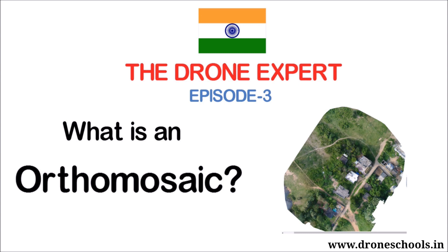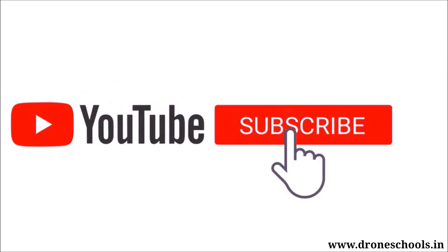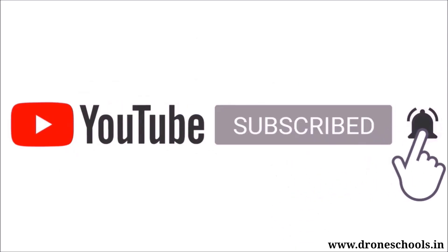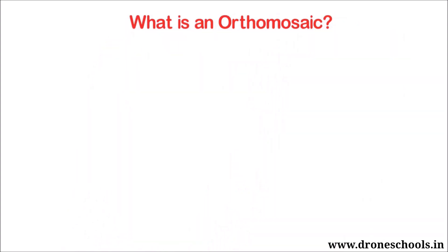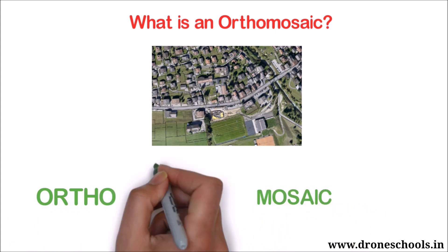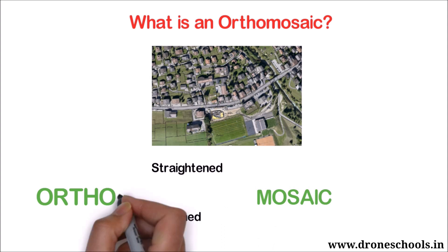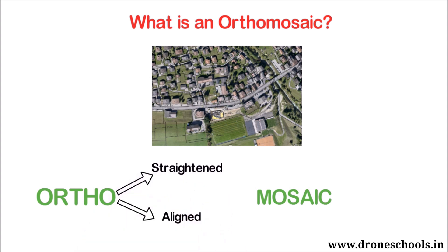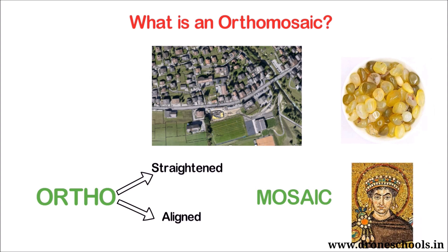If you are new to this channel, consider subscribing. So first, we will discuss what an Orthomosaic is. The word Orthomosaic comprises two words: first, ortho, and second, mosaic. Ortho means straightened and aligned, while a mosaic is a pattern or image made of small, regular or irregular objects, as you can see on the screen.